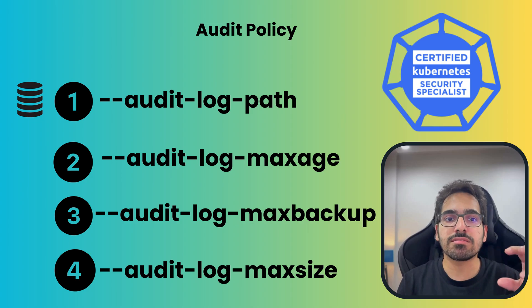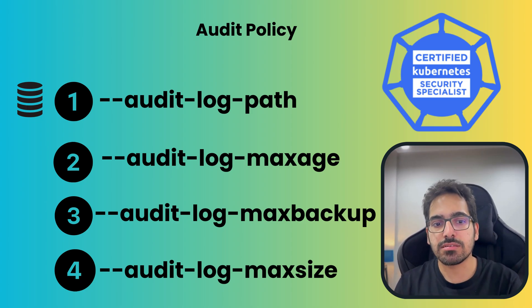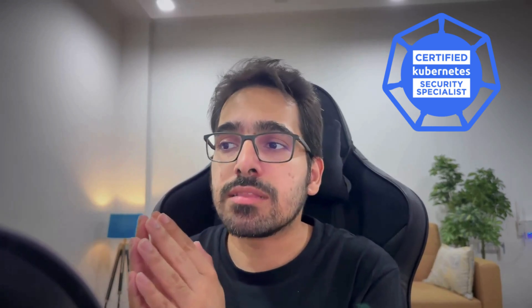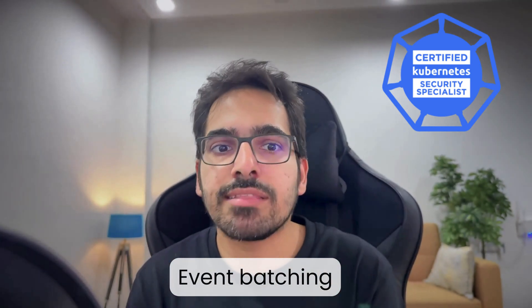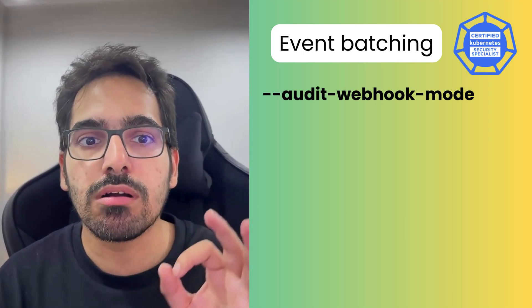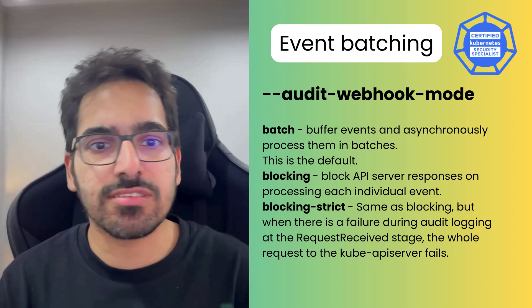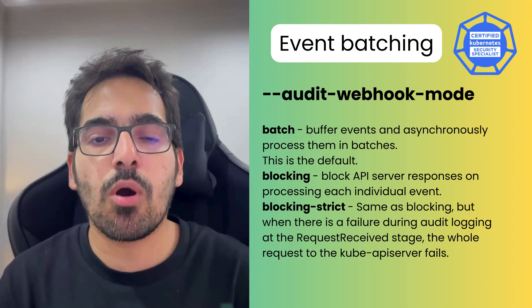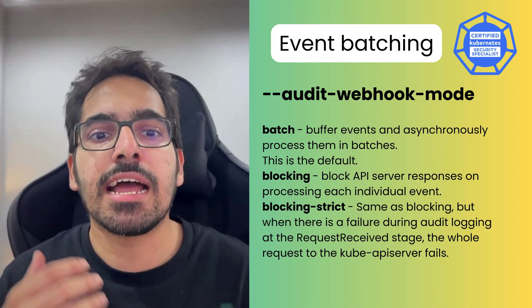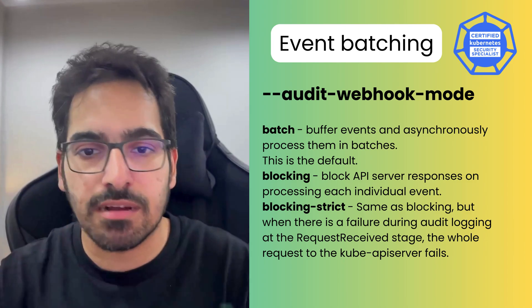These are the four critical flags for the audit log backend. You also need to define the audit policy file and the audit log path when enabling auditing. One last concept: events are sent in batches and there are three modes — batch (the default), blocking (which blocks the API server response while processing each event), and blocking-strict (which fails the entire kube-apiserver request on any failure).